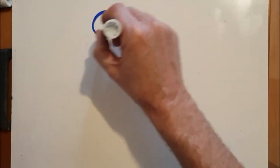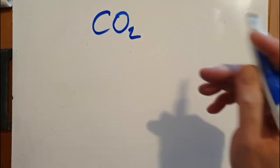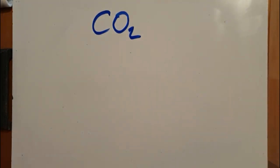The Lewis structure of carbon dioxide. This technique allows you to basically draw any molecule, any covalently bonded molecule in the universe.